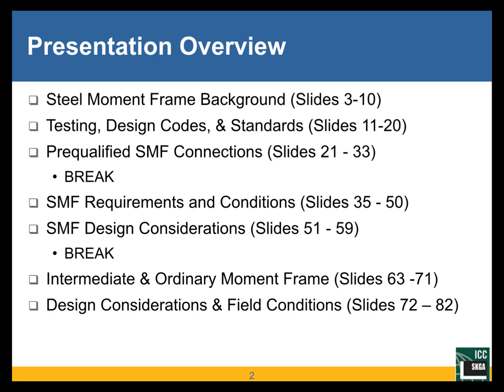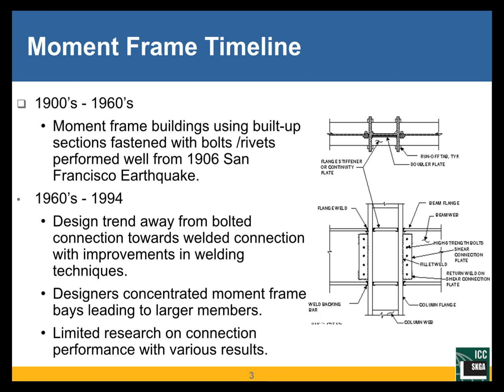Going back a little bit of background on moment frame design: they were actually using steel frames starting in the 1890s. Back then, frames were actually built up using angles and plates as sections since rolled flanges weren't available just yet. They actually performed pretty well given the evidence from the 1906 San Francisco earthquake — the frames did fairly well. Unfortunately, it was the fire that may have caused a lot of the damage from that event.